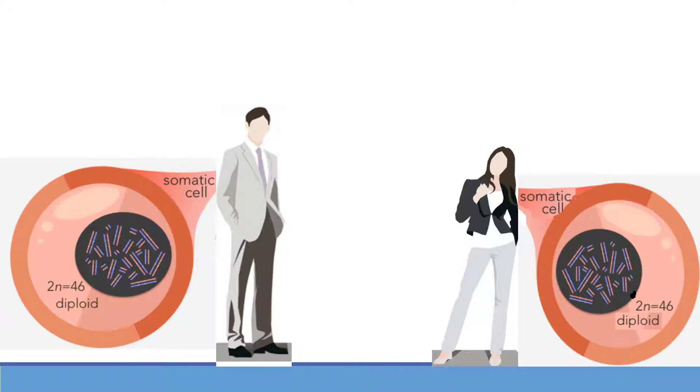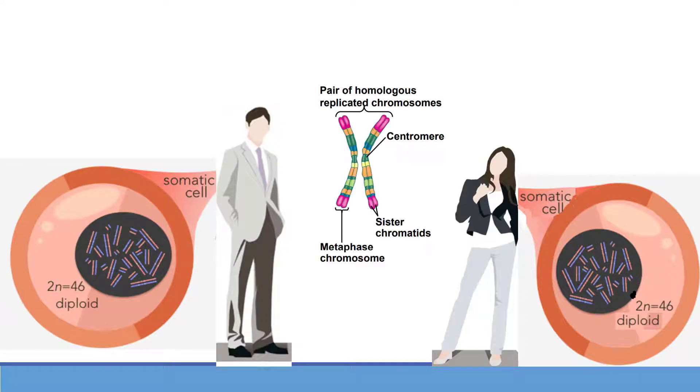As we know that humans contain 46 chromosomes, so they make 23 pairs of chromosomes. And each pair has the same type of genes on it, that's why they are called homologous pairs of chromosomes.